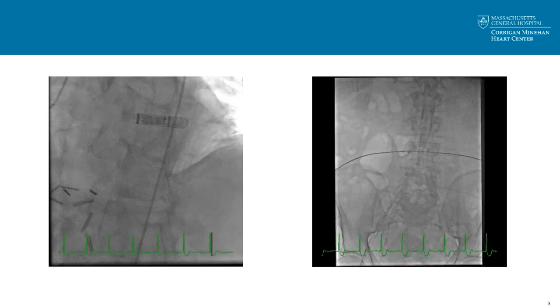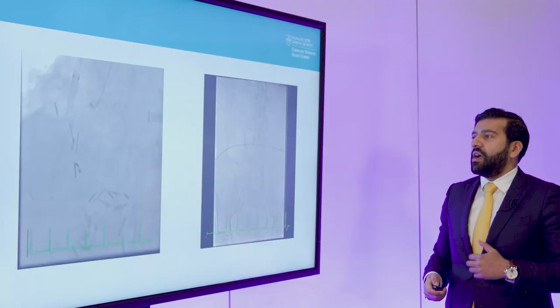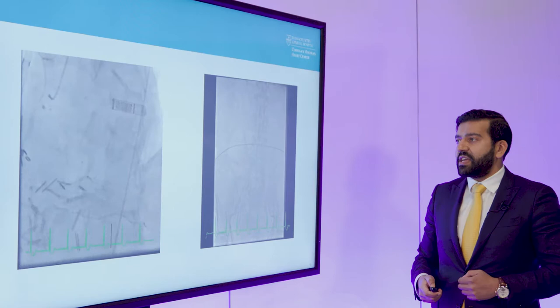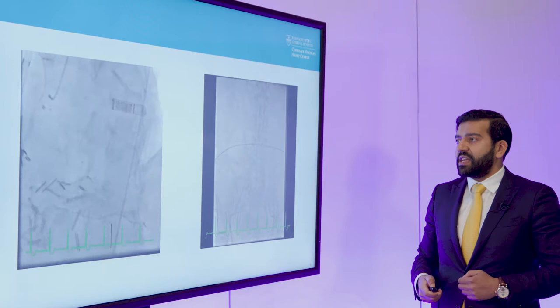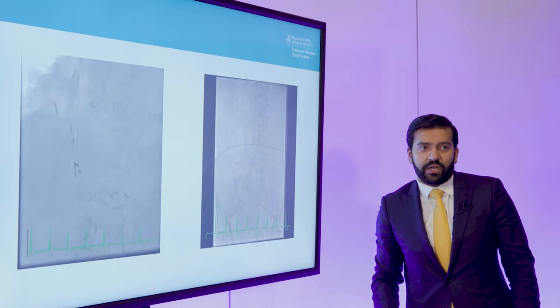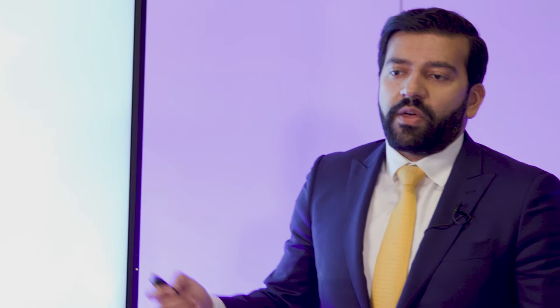Before taking the patient off the table, there was a thought that given his severe calcific disease and hemodialysis, we needed to consider whether his hemodynamics would tolerate intervention without hemodynamic support. This is an iliac angiogram, which surprisingly also shows significant calcification in his iliacs as well.